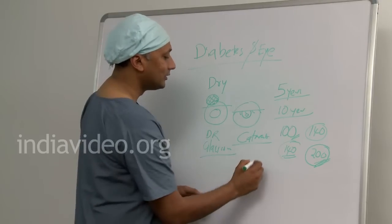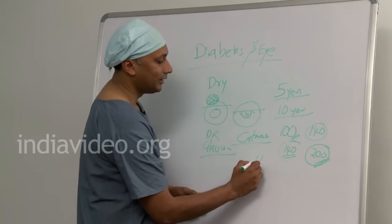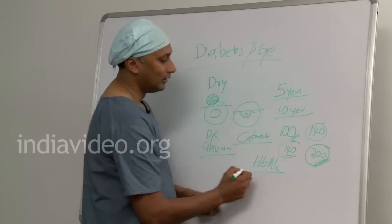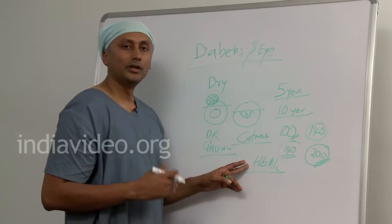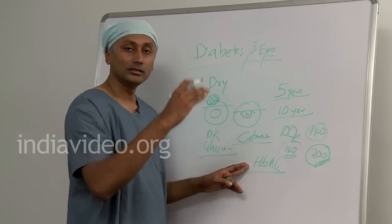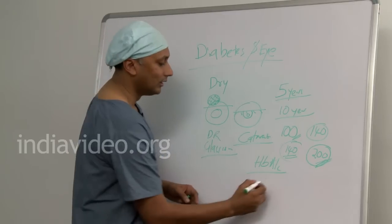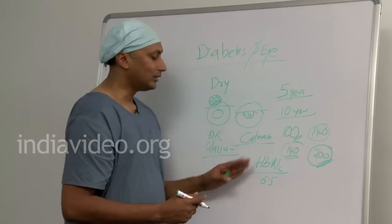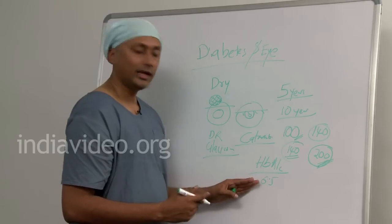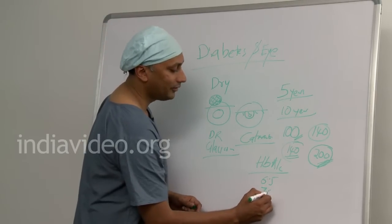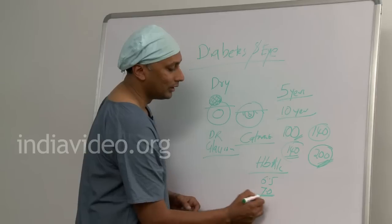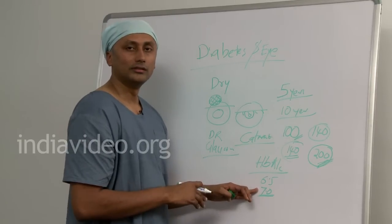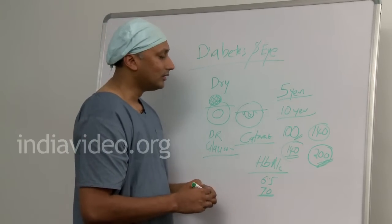Another thing you can do is get a test called HbA1C. This is a test that takes the average blood sugar reading over the last three months. If it is 6.5 or above, the blood sugar control level is inadequate. If it is 7 and above, there is every need to re-evaluate whatever treatment you are presently doing.